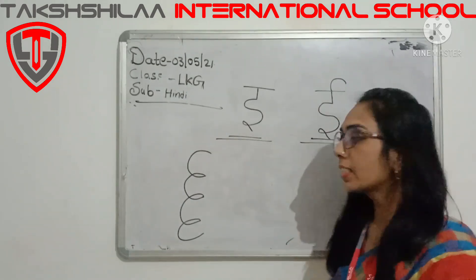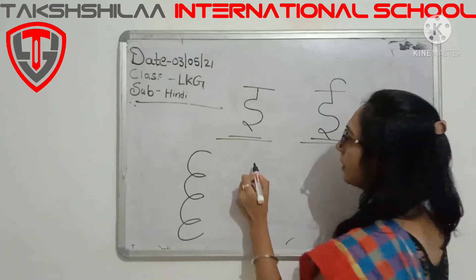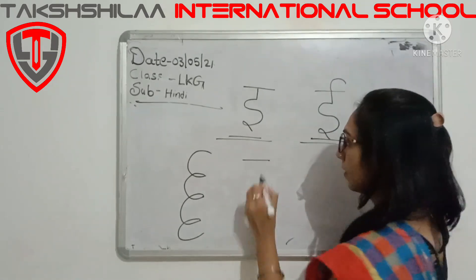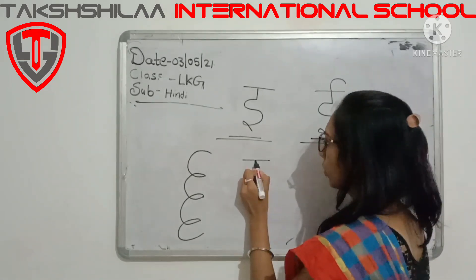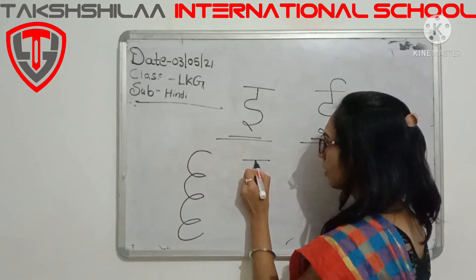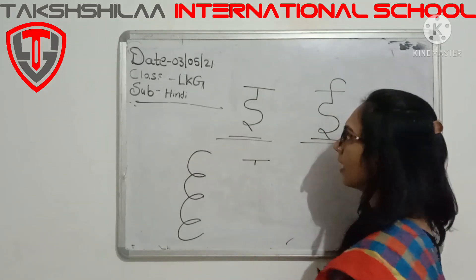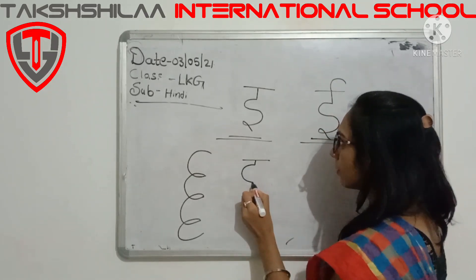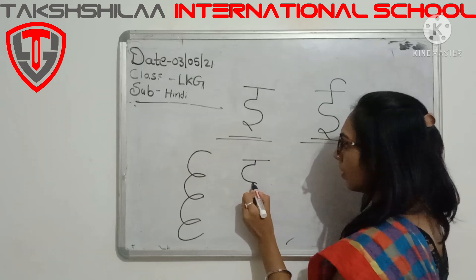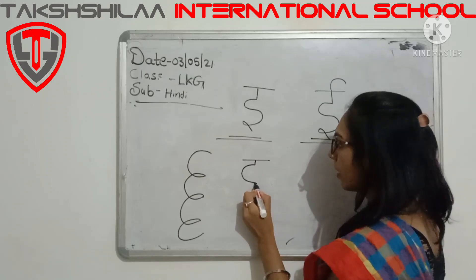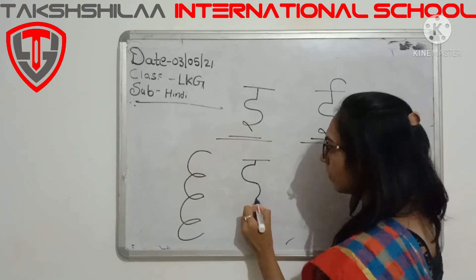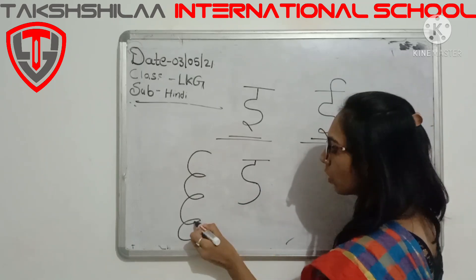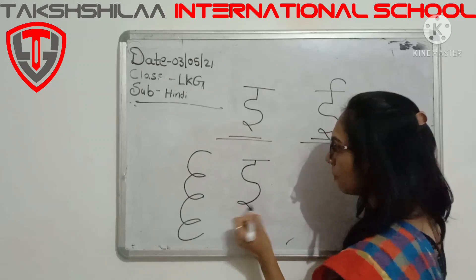क्या लिखें में पहले हैं? स्क्रिपिंग लाइन। छोटी सी स्टेंडिंग लाइन। फिर बनाएंगे कर्व। फिर एक और कर्व इधर से, और यह जो आपने सिखा तो इसको बनाएंगे छोटी सी पूँछ।